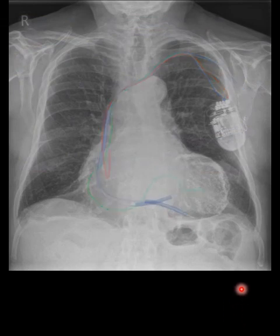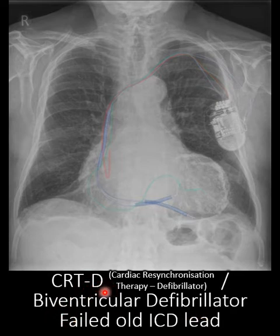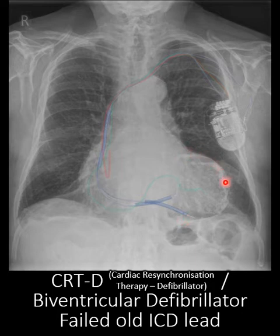Now there are quite a few examples to look through and decide what sort of device each is. This one is a cardiac resynchronization therapy defibrillator, often called a biventricular defibrillator, and there's a failed old ICD lead. You can also see here that there's an LV aneurysm which is heavily calcified — this patient has had an old anterior infarct.